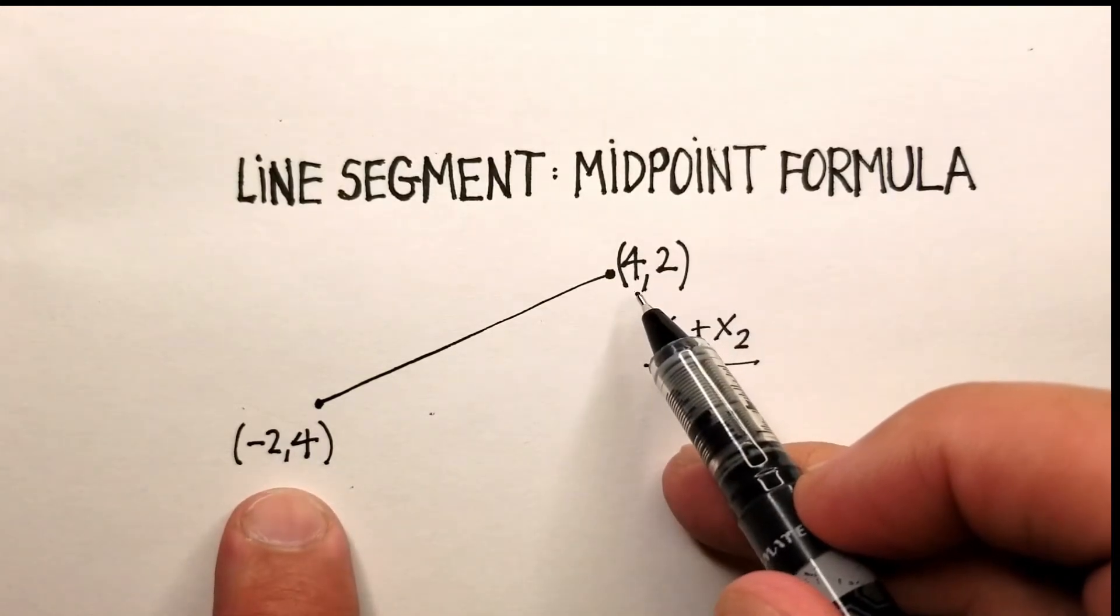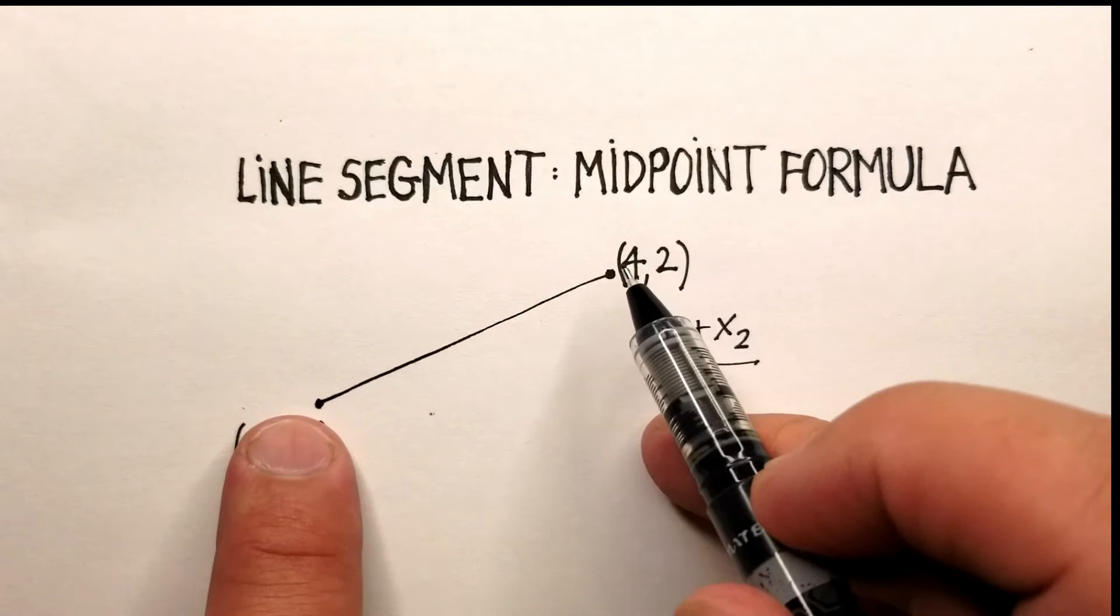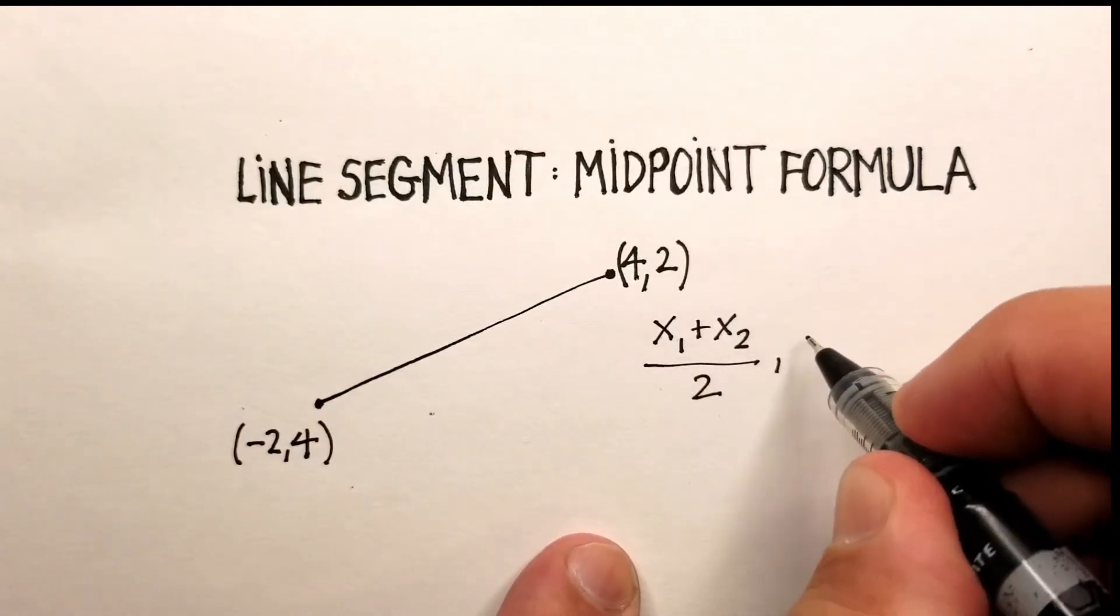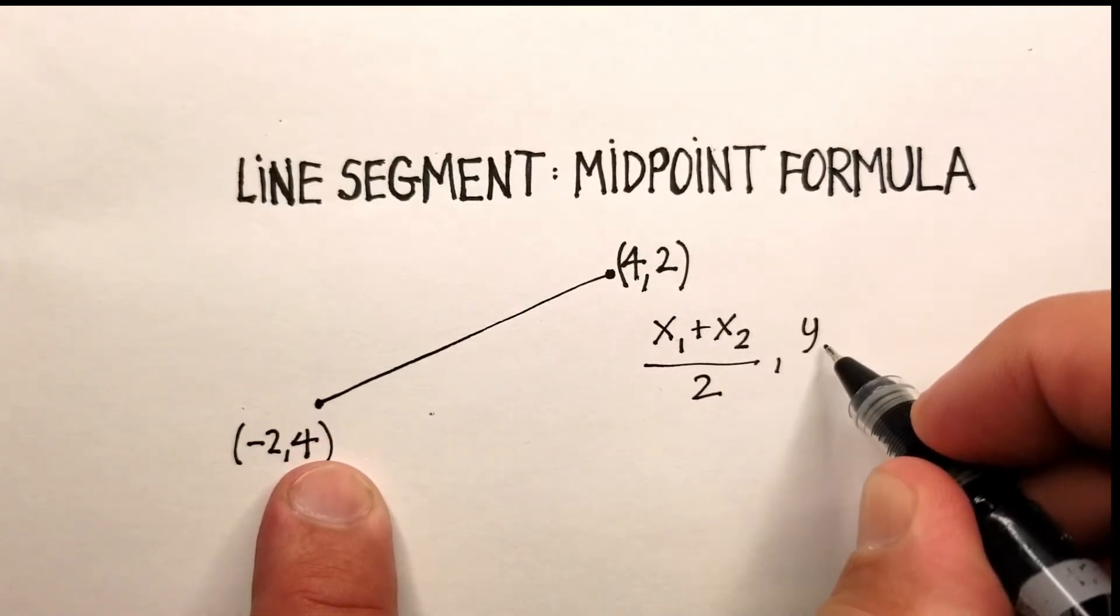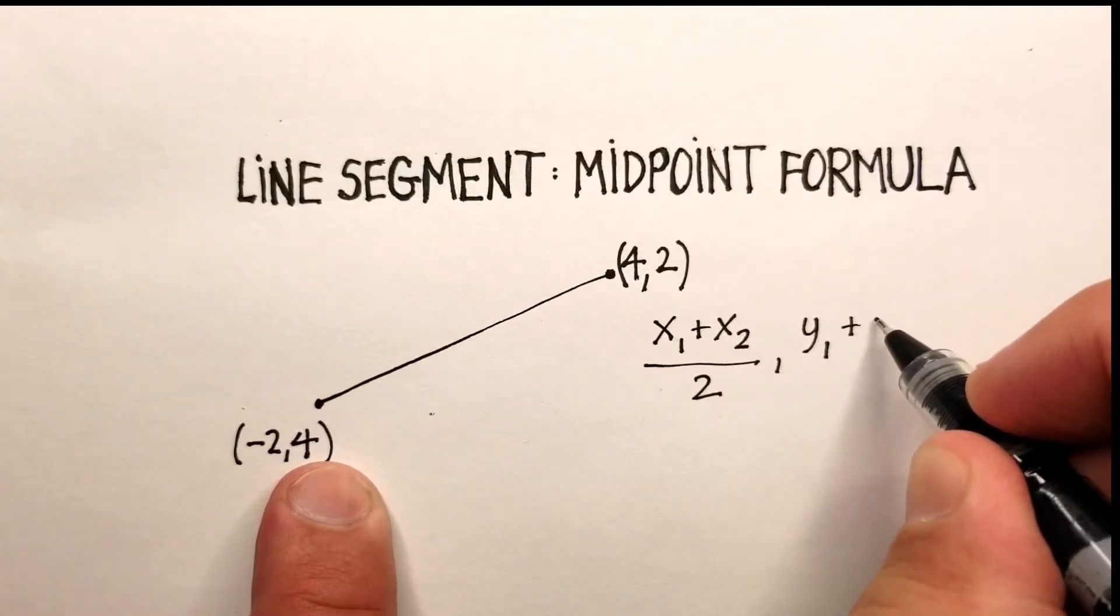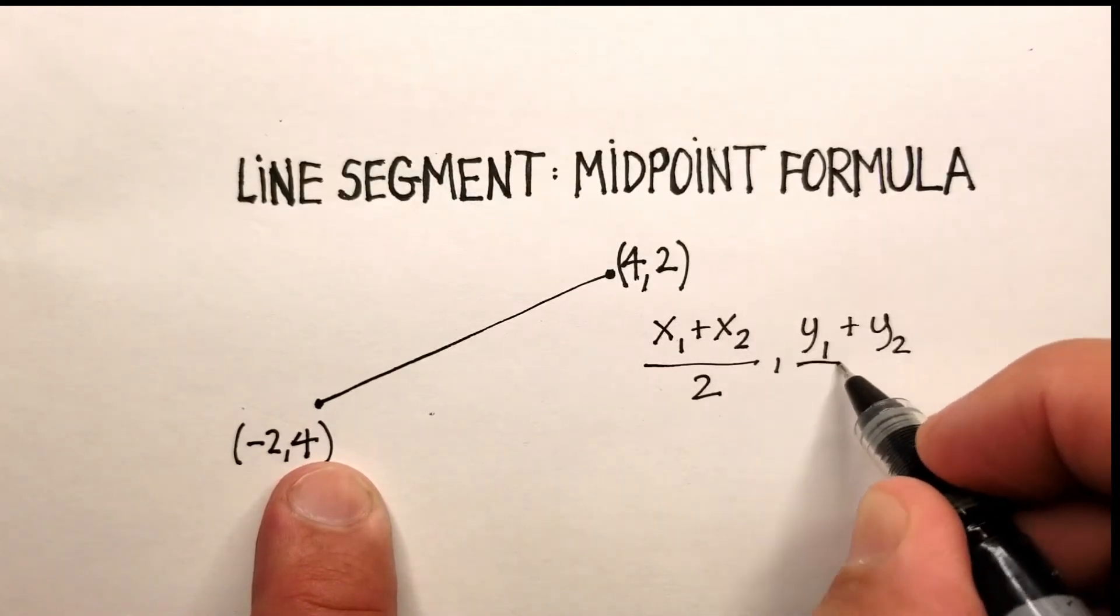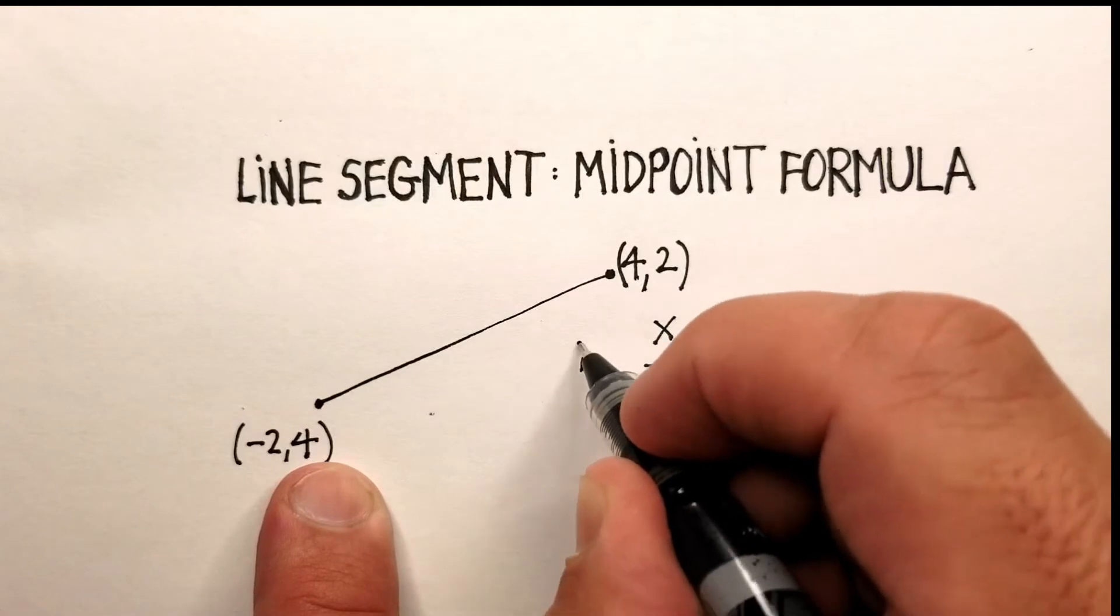You simply add the x's for both of the coordinates and divide it by 2. Essentially, what you're doing is you're just taking the average between these two. And then you just do the same thing with the two y coordinates as well. So I'm going to call this y1 plus y2 divided by 2.